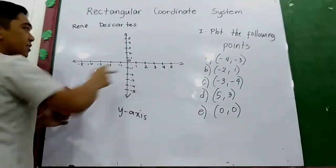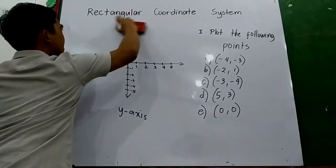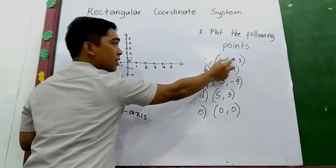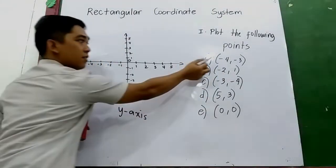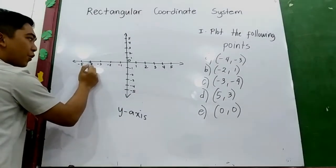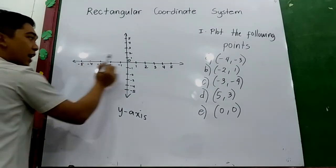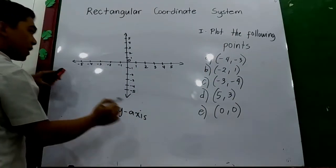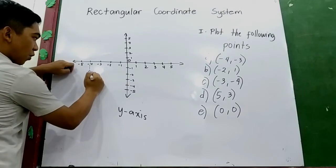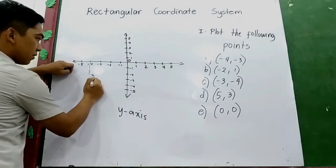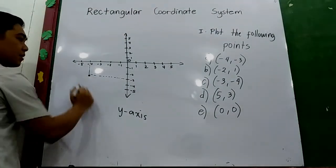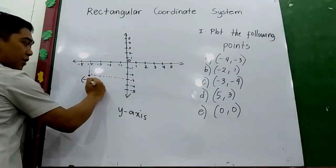Let us use this coordinate system. Let us plot letter A: negative 4, negative 3. X is negative 4 on the x-axis, then y is negative 3. Negative 4 and negative 3, going down. So this is our point: negative 4, negative 3.